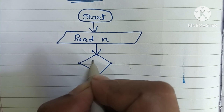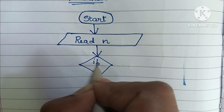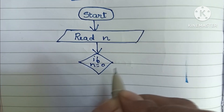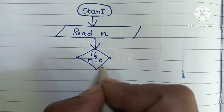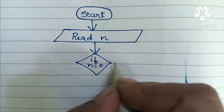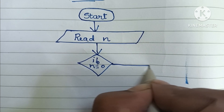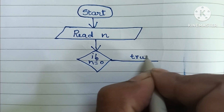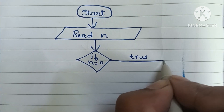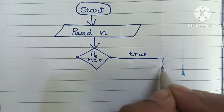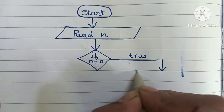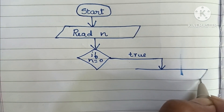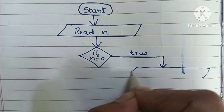Next, we check if N is equal to zero — the condition is written within a diamond shape. If this condition is true, we print 'zero value'.